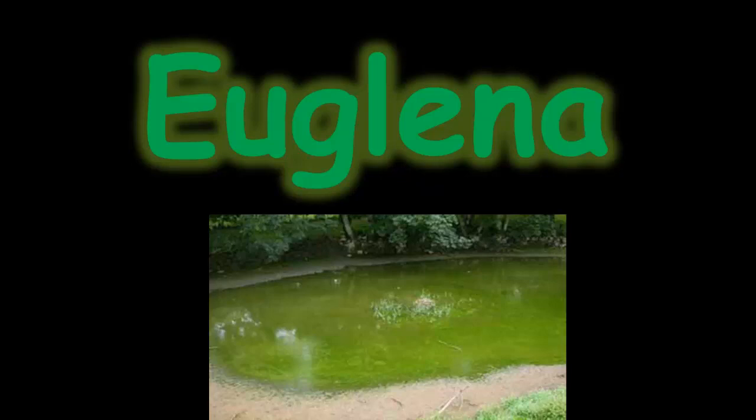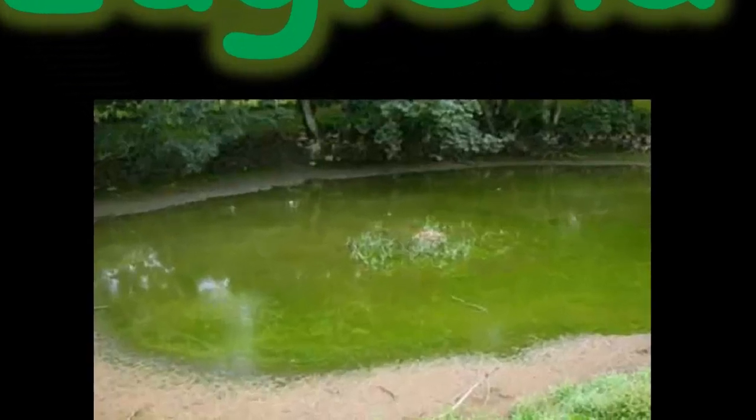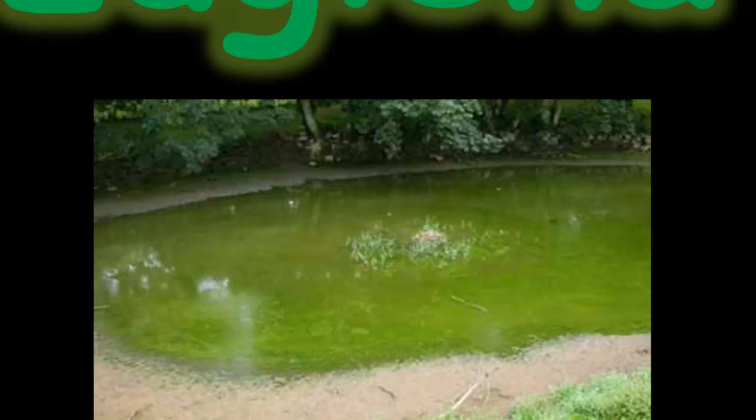Today we're going to have a look at an organism called Euglena. Euglena is found in fresh water. A lot of people know it as that green slime that forms on the surface of stagnant water.